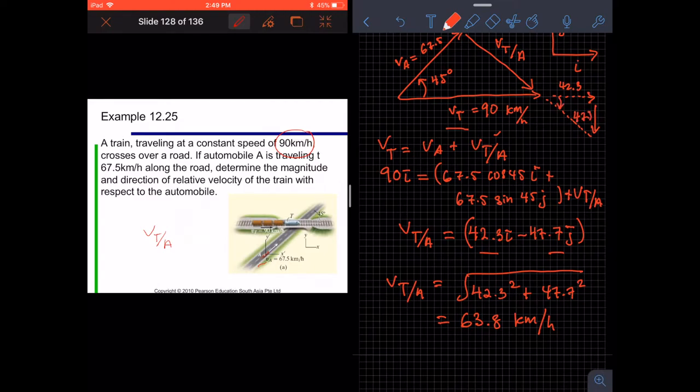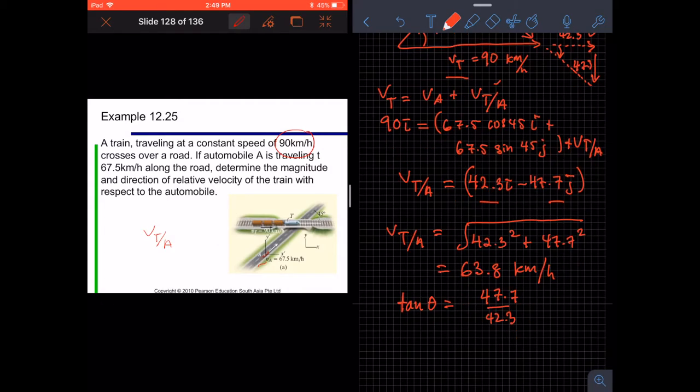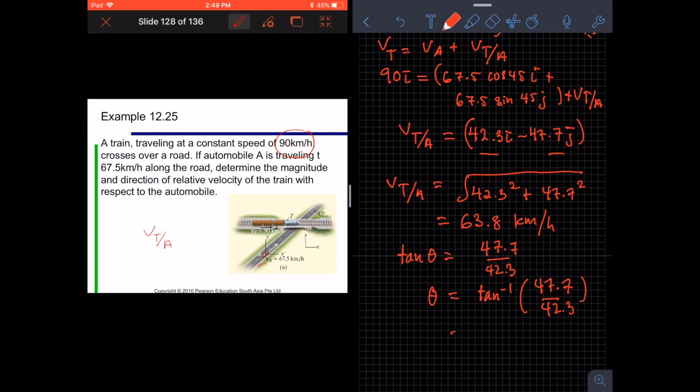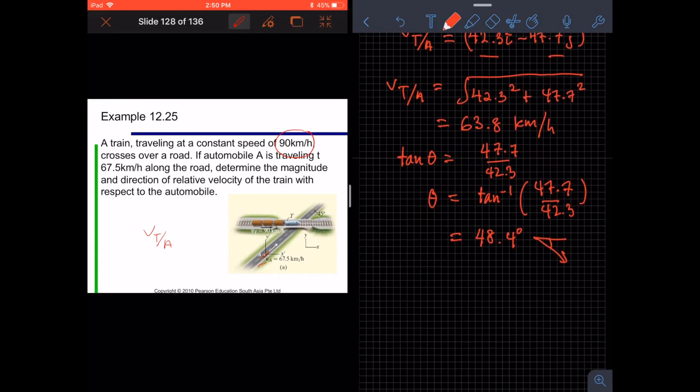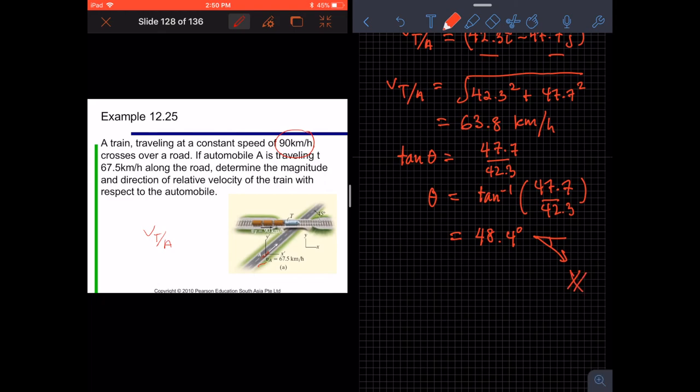For the direction, we can use tan. tan theta equals 47.7 divided by 42.3. And later, we can calculate this into tan inverse, 47.7 divided by 42.3. And finally, we will have 48 degrees going to this direction. So, this is the answer for the direction.